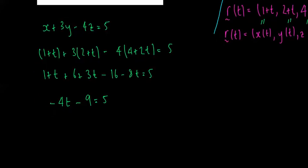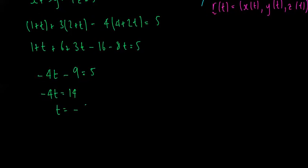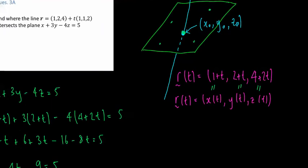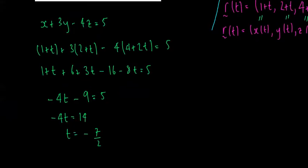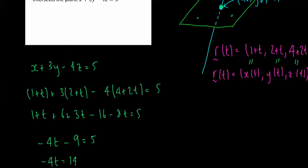Therefore, negative 4T is equal to 9 plus 5, which is 14, so T is equal to negative 14 over 4, or negative 7 over 2. So that means that along the line, when T is equal to negative 7 over 2, we're at the point of intersection.